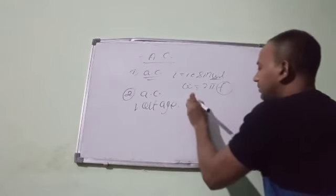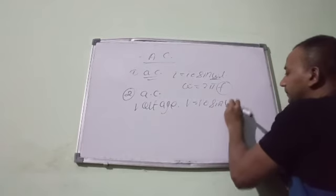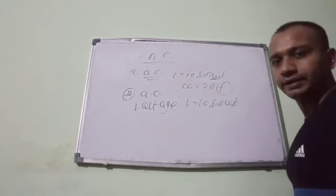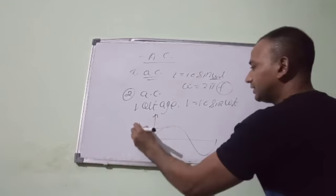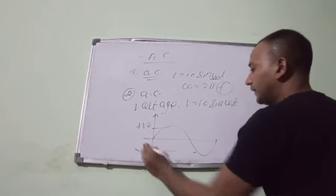So it can be represented by V naught sine omega t. Similarly we will get the same graph. Again it is sinusoidal. So it will be plus V naught and it will be minus V naught.